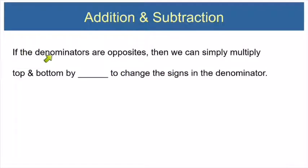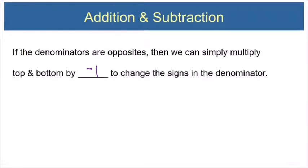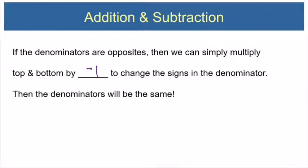It happens sometimes that the denominators will be opposites. When that happens, all we have to do is multiply the top and the bottom by negative 1 to change the signs in one of the denominators — and then the denominators will be the same. Let's do an example like that.